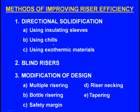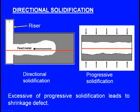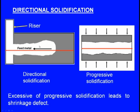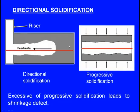Directional solidification can be achieved using insulating sleeves, chills, or exothermic materials. Here you can see the casting and the riser. The white color indicates liquid metal, while the gray color indicates solidified metal. Solidification progresses toward the riser — this is directional solidification. In the second case, the solidification is progressing perpendicular to the centerline of the casting, which is progressive solidification.